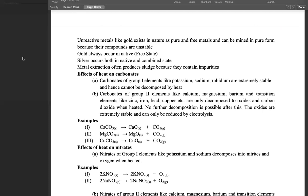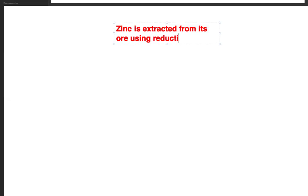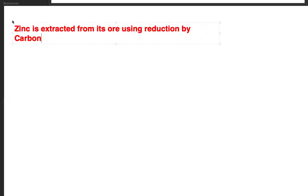First thing first: zinc is extracted using reduction by carbon. Reduction by carbon is the method we use to extract zinc from its mixture.